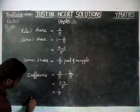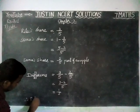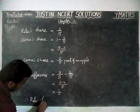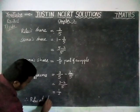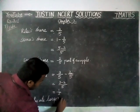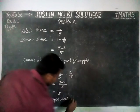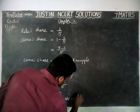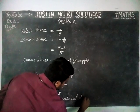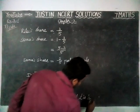Therefore, Ritu had the larger share, and it is 1/5 greater.